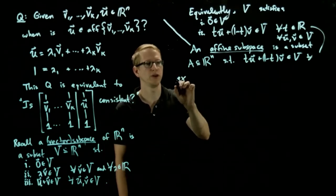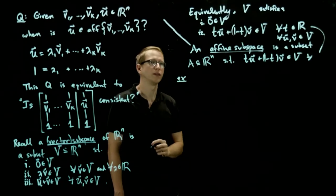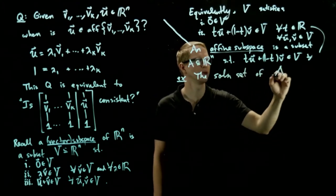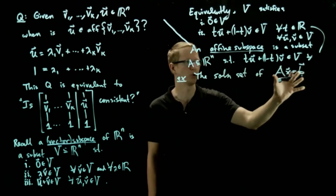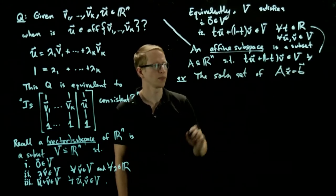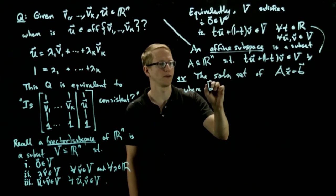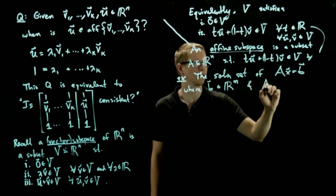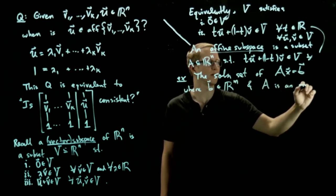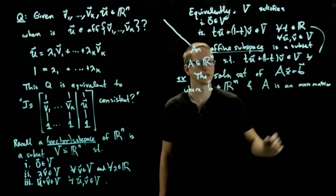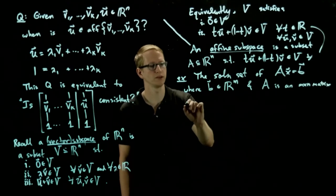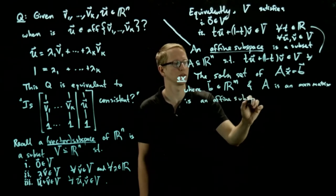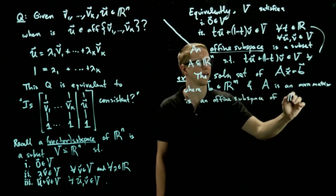So the main example that we want to illustrate is the solution set of any linear system Ax = b. This is just notation for a linear system where b is a vector in R^m and A is an m by n matrix.